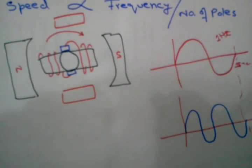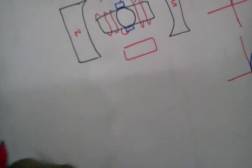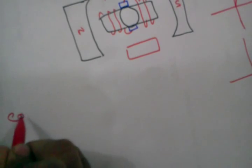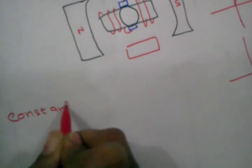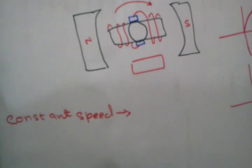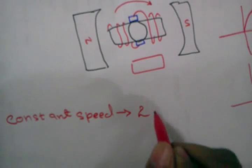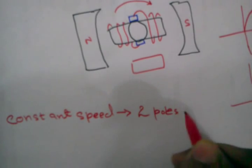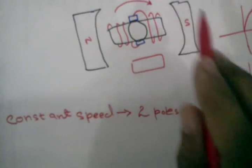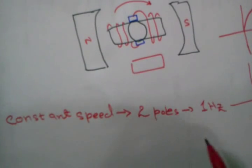So taking this point, I have made a complete summary of this. If I take constant speed and if there are two number of poles, its frequency will be one hertz in one second. If it completes one rotation in one second, then its frequency will be one hertz.